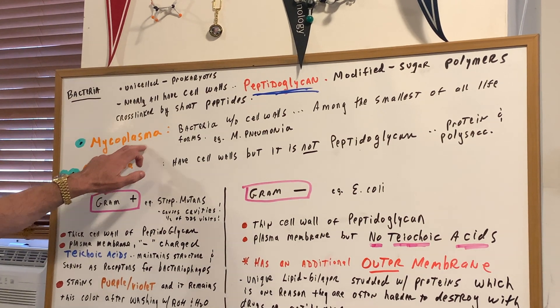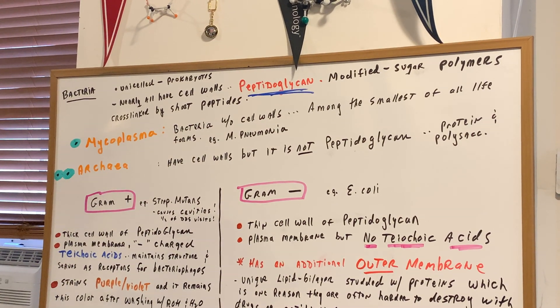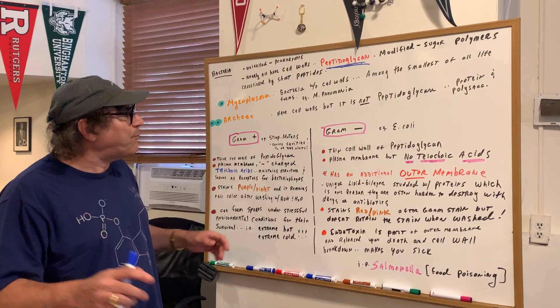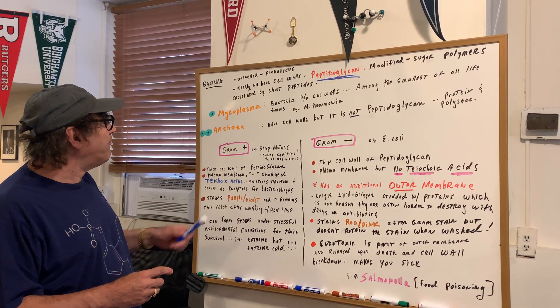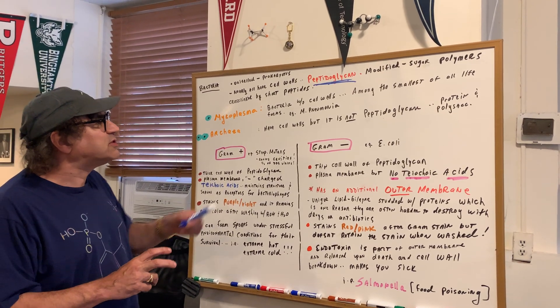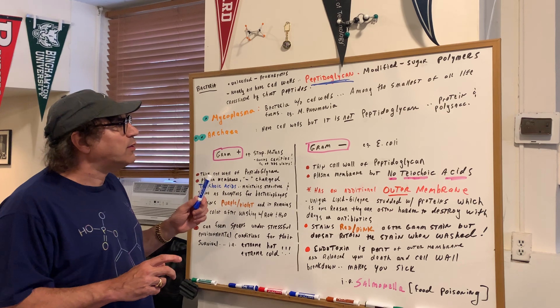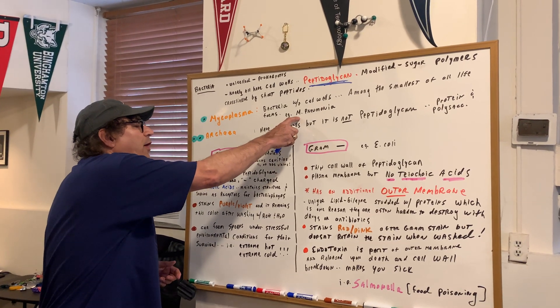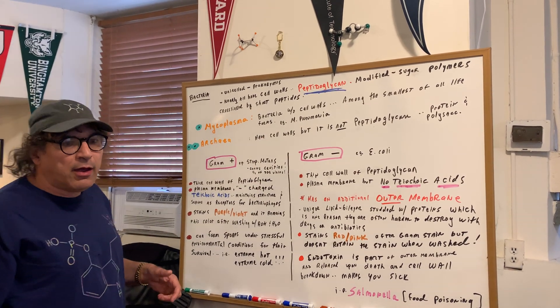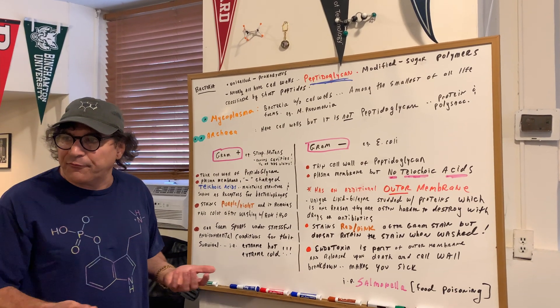Now in mycoplasma, these are bacteria without cell walls, something we never mentioned in the group, but God forbid if that ever landed on the DAT or the MCAT. So mycoplasma, bacteria without cell walls, and they're among the smallest of all life forms. And to give you a concrete one, mycoplasma pneumoniae would cause a form of pneumonia.